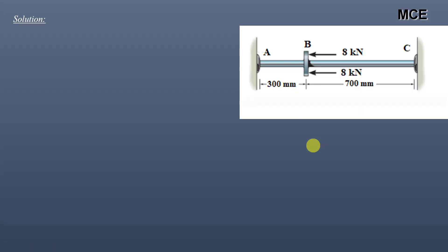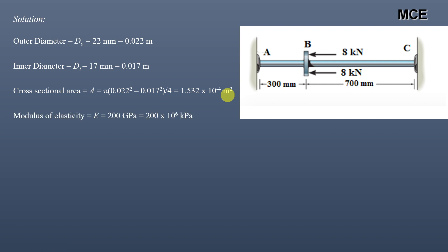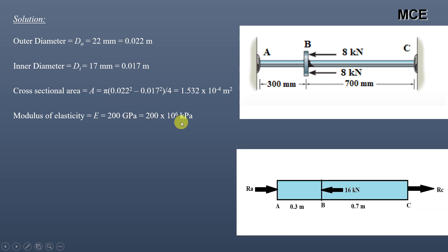First, let us see what we have been given in the question. Outer diameter is 22 mm or 0.022 m, and inner diameter is 17 mm or 0.017 m. Cross-sectional area = π(outer diameter² − inner diameter²) / 4 = π(0.022² − 0.017²) / 4 = 1.532 × 10⁻⁴ m². Modulus of elasticity for A36 steel is 200 GPa, or 200 × 10⁶ kPa.